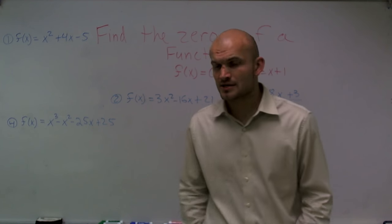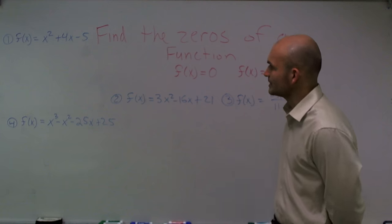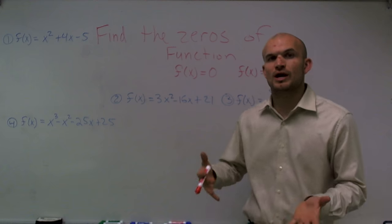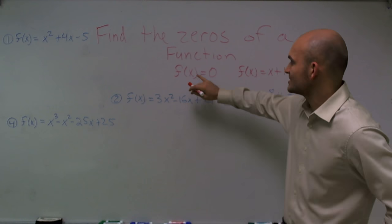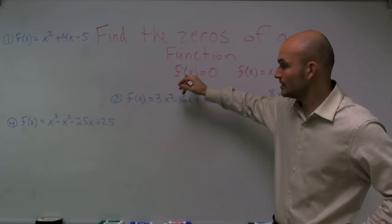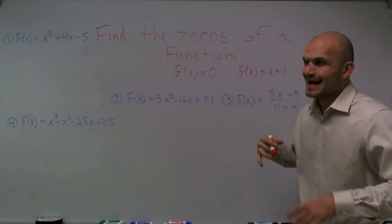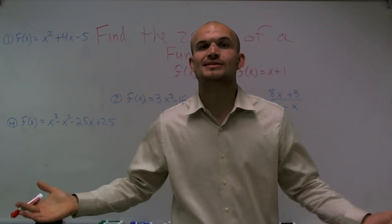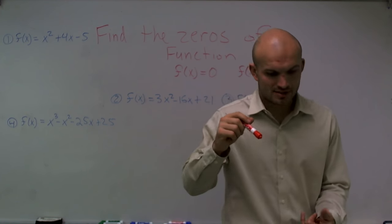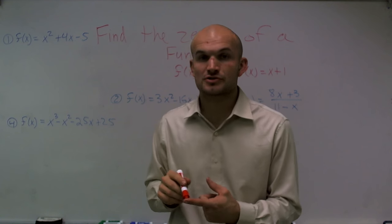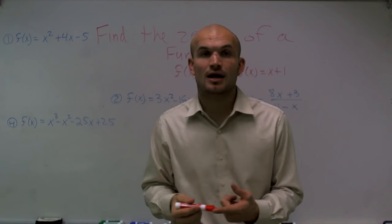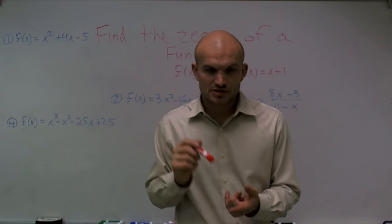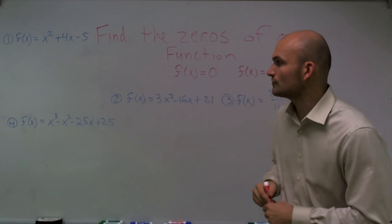The main important thing — remember a function has our input and our output. The zeros of our function is when our output is equal to zero. So what we say is f of x, which is our output, equals zero. Any x value that I input where it gives me an output of zero is what we call a zero. The zeros are also the x-intercepts of a graph of any polynomial, and you sometimes call them the roots of your function as well.